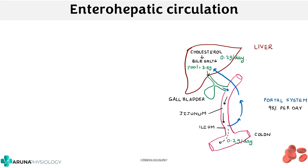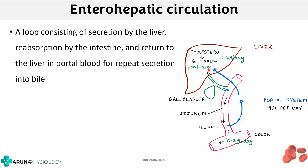Enterohepatic circulation applies to bile salts but also to urobilinogen. Bile is excreted into the intestine, but some is taken back into the portal system and returned to the liver. It is basically a loop consisting of secretion by the liver, reabsorption by the intestine, and return to the liver by the portal blood for repeat excretion into the bile.